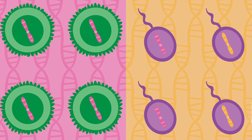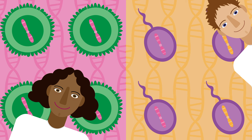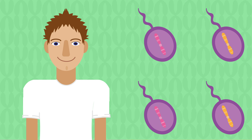Person A only has chin dimple gene gametes, so they have a 100% chance of passing on the chin dimple gene to their offspring. Person B, however, has a 50% chance of passing on a smooth chin gene and a 50% chance of passing on a chin dimple gene. What if we wanted to ensure that person B passed on the smooth chin gene? We would need to ensure they only made gametes containing smooth chin genes.